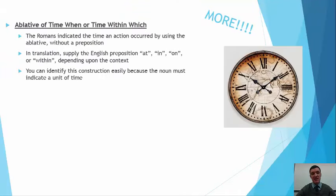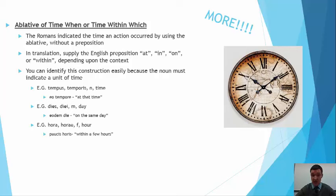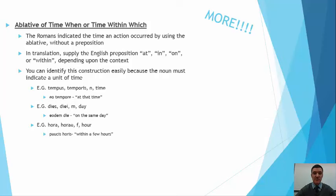One more, two more. Ablative of time. Specifically, it breaks down into two different constructions, time when or time within which. The Romans indicated that time and action occurred by using the ablative case without a preposition. In translation, supply the English preposition at, in, or on, if it's time when, or within, depending on the context. Now in terms of identifying this construction, it's going to be pretty easy. The noun has to be a unit of time. So a couple examples here. The noun tempus temporis means time. That's a unit of time. So you see eo tempore, at that time. You could also say in that time, on that time. Dies diei, a fifth declension masculine noun that means day. Eodem die, on the same day, in the same day, at the same day. You can even say within the same day. Hora, horae, a feminine noun of the first declension meaning hour. Paucis horis, within a few hours.